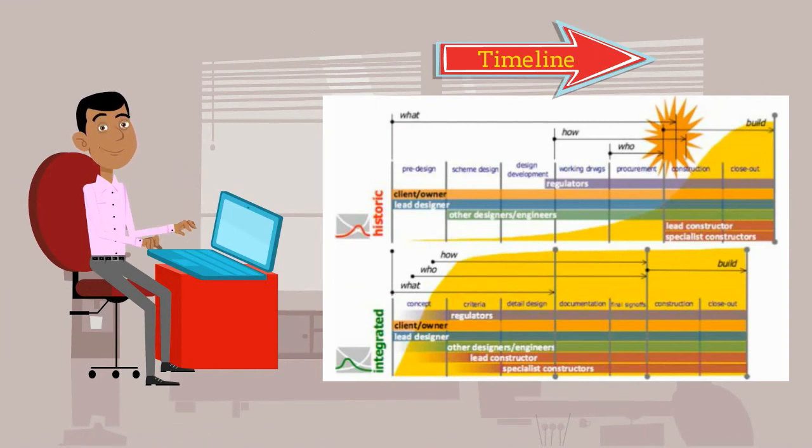The yellow part depicts the shared understanding of the project. So, in IPD projects, the know-how is shared during all the time from the project concept. Instead, in classic projects, the information is shared only when the constructor comes into play.